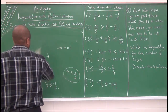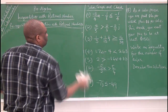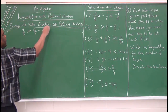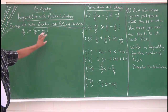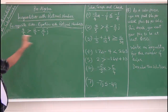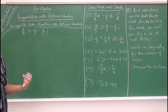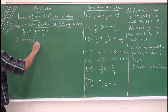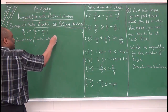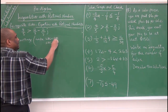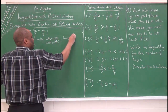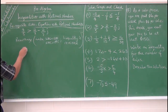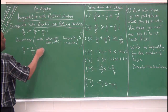Number 2: 4 over 5 is greater than 2 over 3 minus 2 over 7j. The variable is on the right hand side, so the best thing is to rearrange. When you rearrange, the inequality is reversed. So we now have: 2 over 3 minus 2 over 7j is less than 4 over 5.